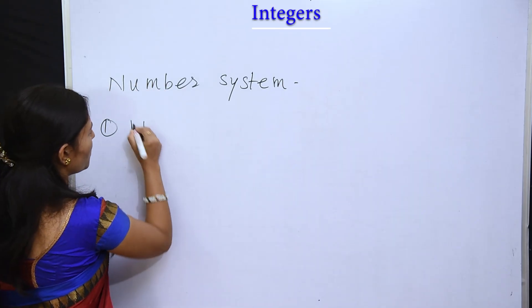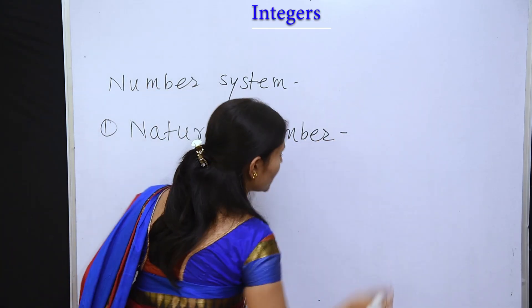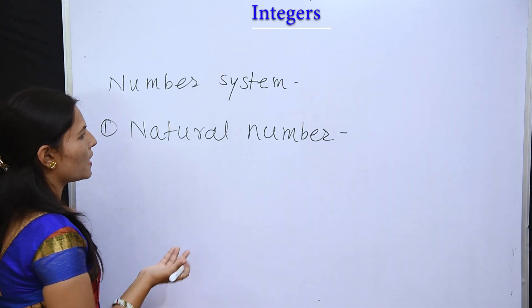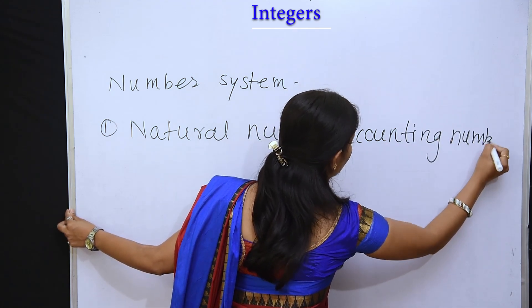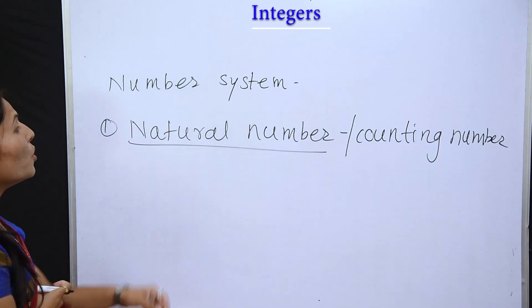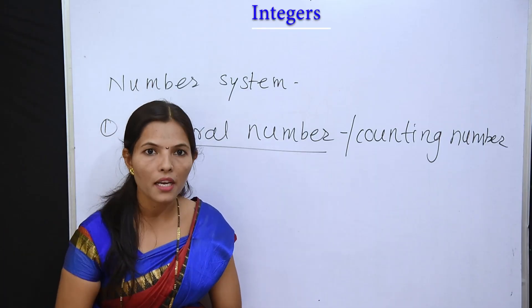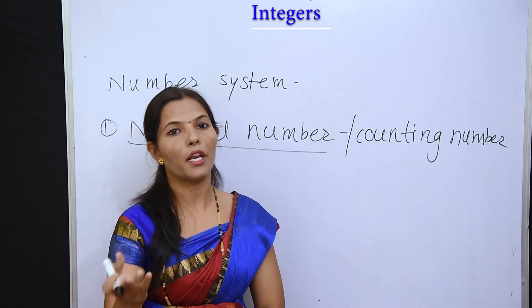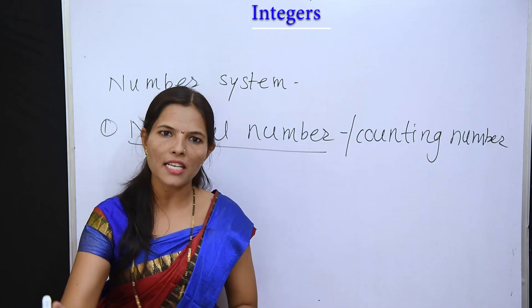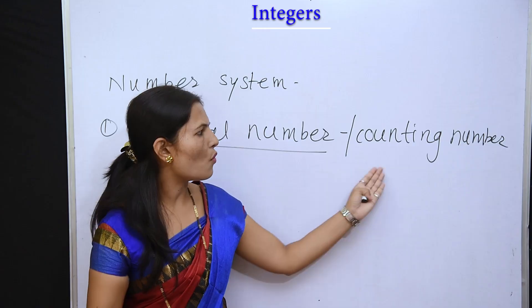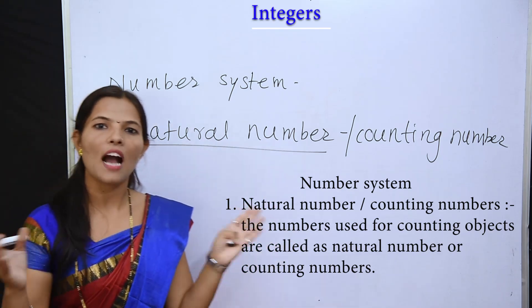Let's see: which is the first number? The first number is natural number. What is the natural number? Natural number is also called as counting numbers. The definition of natural numbers is: the numbers which are used for counting objects are called as counting numbers.